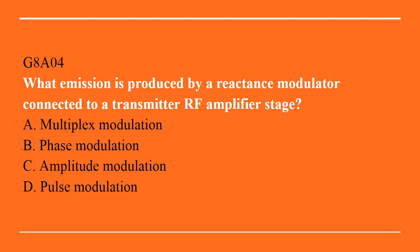G8A04: What emission is produced by a reactance modulator connected to a transmitter RF amplifier stage? A. Multiplex modulation. B. Phase modulation. C. Amplitude modulation. D. Pulse modulation. Answer is B. Phase modulation.